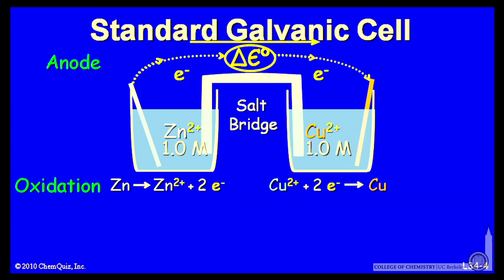At the cathode, the other electrode of a two-cell reaction, a reduction will occur. So the reduction is the copper ions being reduced to copper metal. So a reduction occurs here, and we'll call the reduction the cathode.